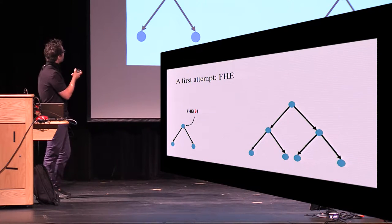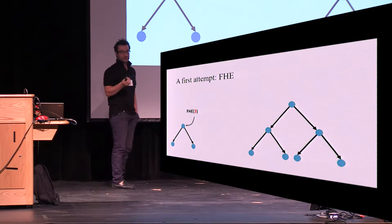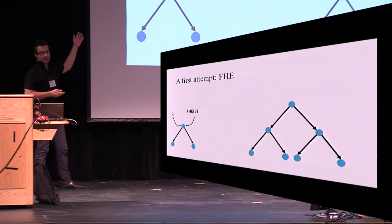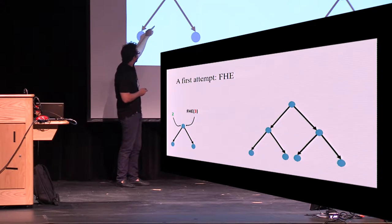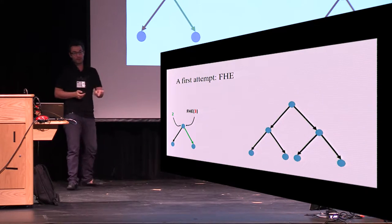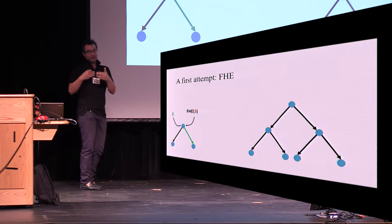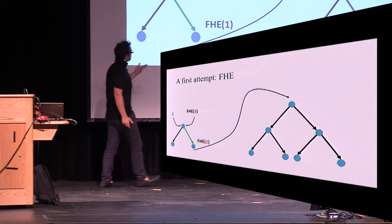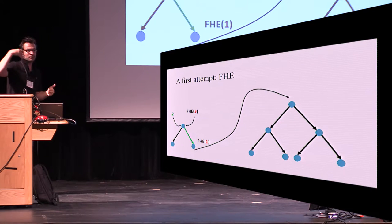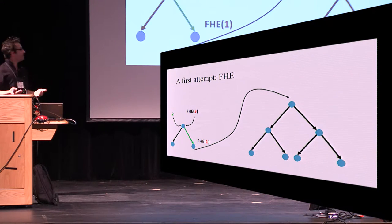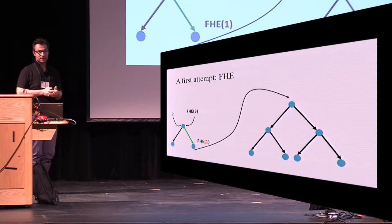Let's try fully homomorphic encryption — it's very powerful. We encrypt the input with an FHE scheme. Given the public path, we run the computation at each node. But the output of FHE is always encrypted, so when it computes the next path to access, that path will also be encrypted and therefore useless — the server cannot use it. To continue, you'd have to send it back, decrypt, and resume execution. So fully homomorphic encryption will not work.